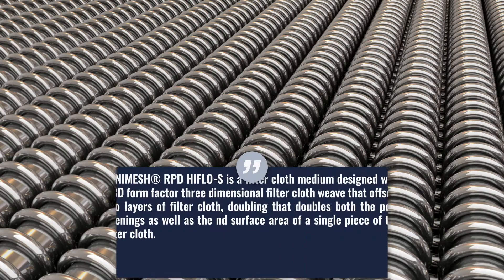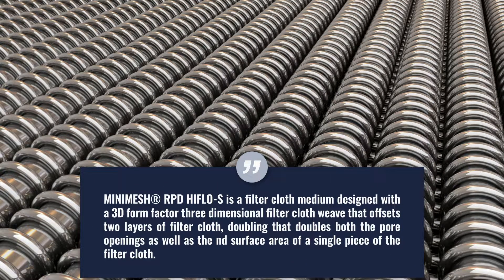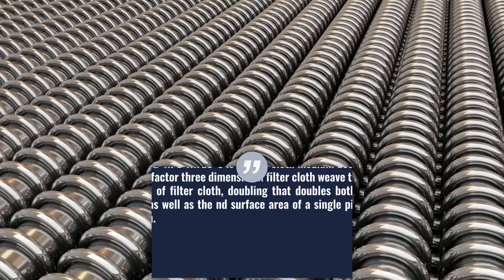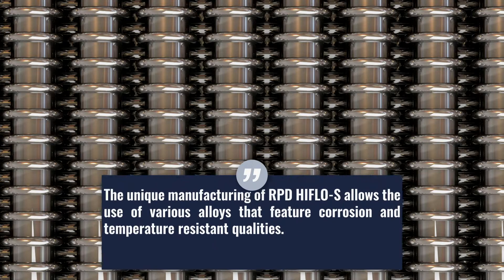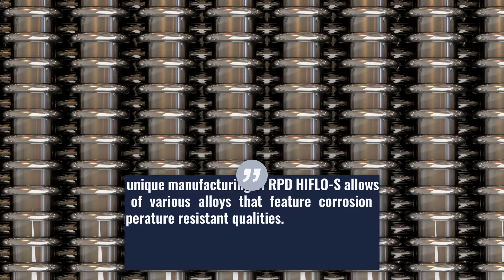Mini Mesh RPD Hive Flow S is a three-dimensional filter cloth weave that offsets two layers of filter cloth, doubling the pore openings and surface area of the filter. The unique manufacturing of RPD Hive Flow S allows us to use various alloys that feature corrosion and temperature-resistant properties.